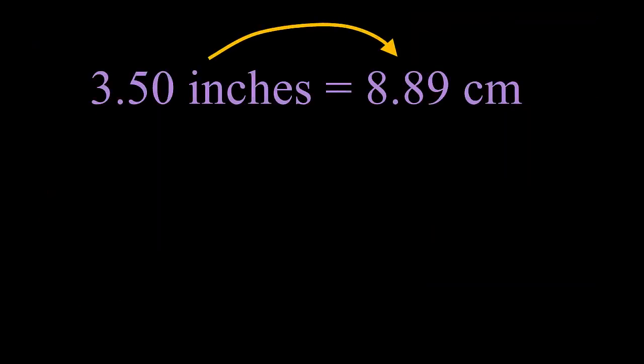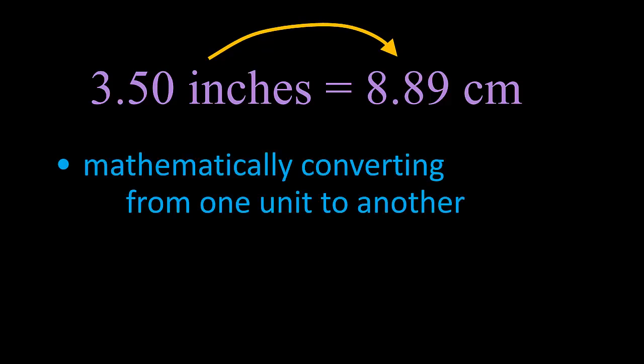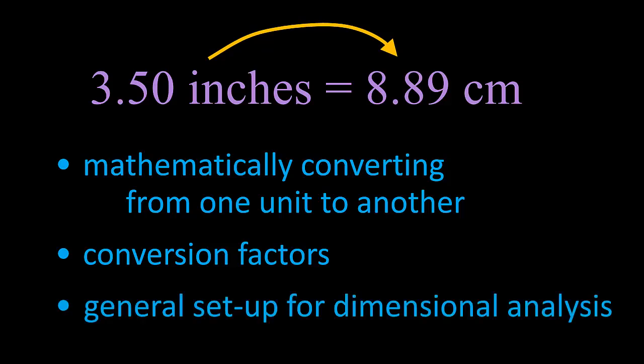So we saw that 3.5 inches is the same as 8.89 centimeters. Let's take a look at how we can mathematically convert from one unit to another using what are called conversion factors, and seeing how they are used in the specific mathematical structure called dimensional analysis.